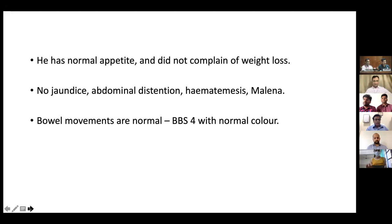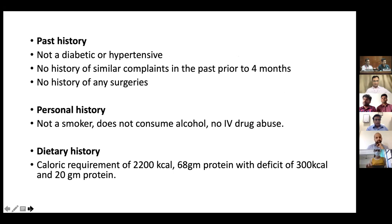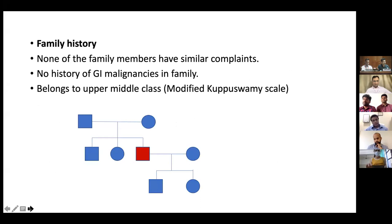His bowel movements are normal with normal stool consistency and color. Past history: he is not a diabetic or hypertensive. Prior to the complaint four months back, he did not have any similar complaints. There is no history of surgeries. He is not a smoker. He does not consume alcohol and there is no history of IV drug abuse. His calorie requirement is 2200 kilocalories with 68 gram protein, with a deficit of 300 kilocalories and 20 grams of protein in dietary intake. None of his family members have had any similar complaints and there is no history of GI malignancies. He belonged to upper middle class on the modified Kuppuswamy scale.